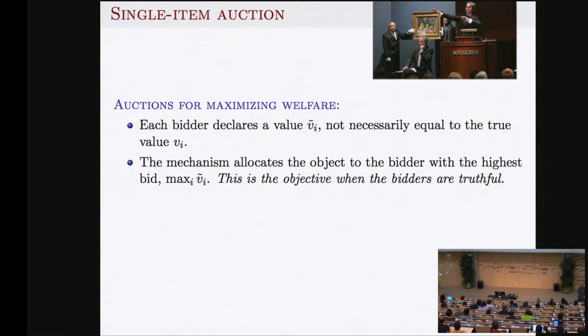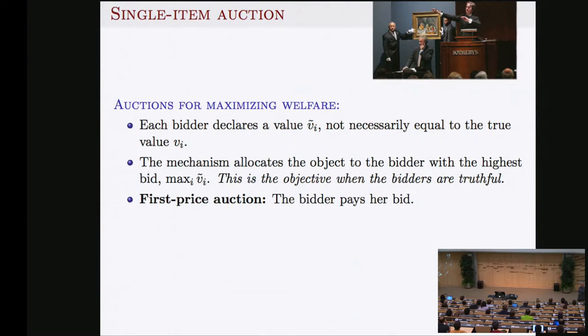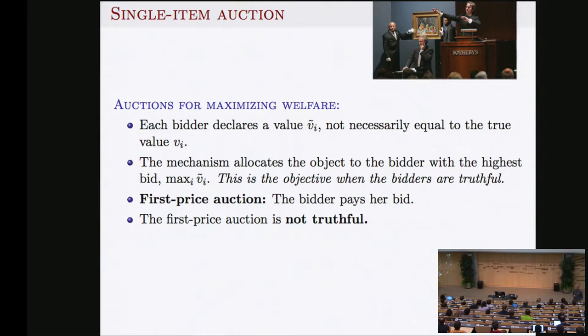Consider the natural mechanism: give the item to the highest bidder and they pay their declared price. If declared values are 5, 3, 2 — the maximum is 5, the player who declared 5 gets the item and pays 5. The problem is this is not truthful — you have an incentive to lie. If you knew the numbers were 5, 3, 2, you'd declare 3.1 instead of 5, still get the item, and pay 3.1. So this is not incentive compatible.